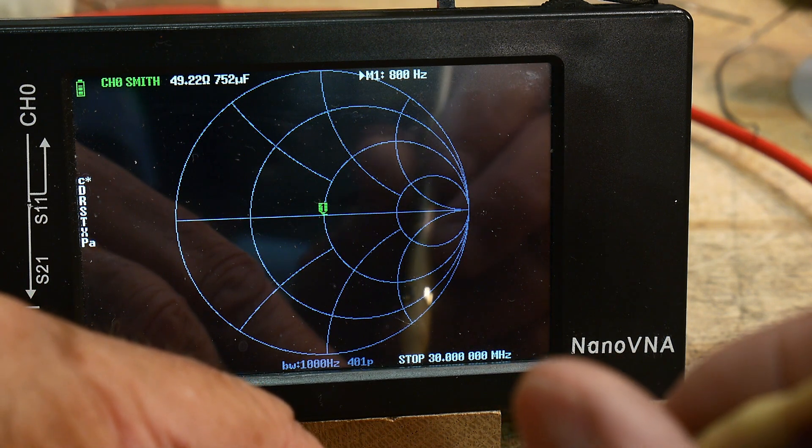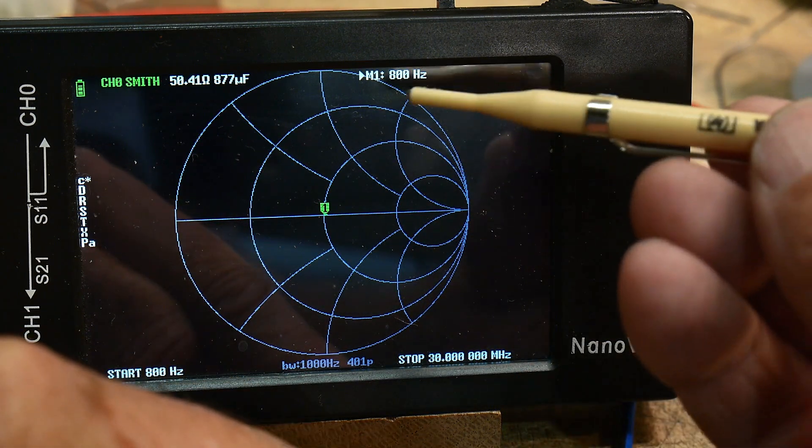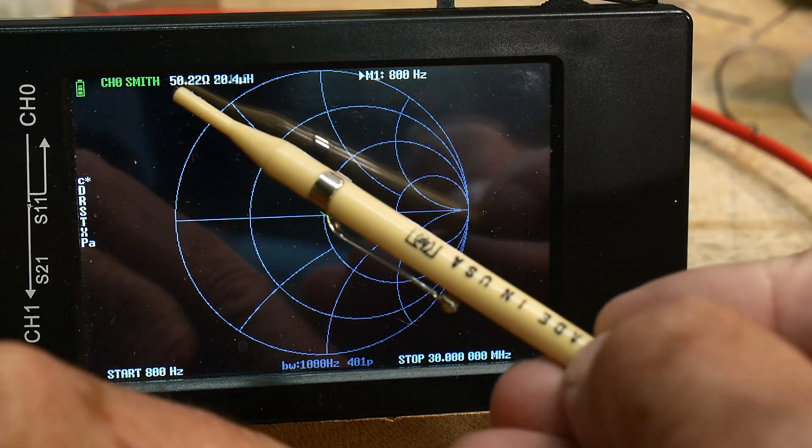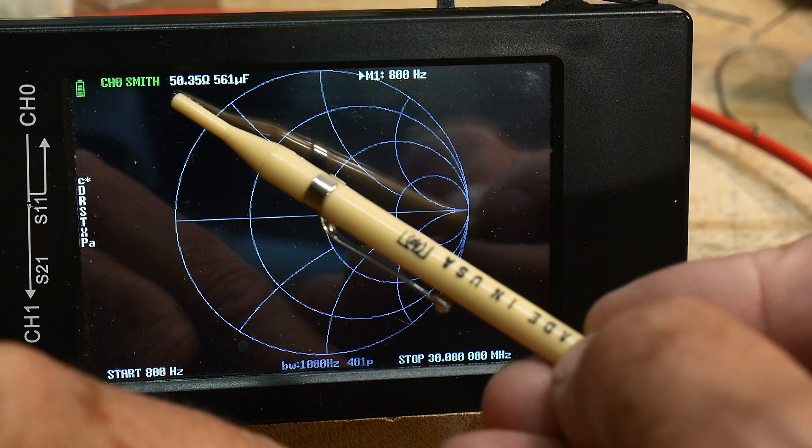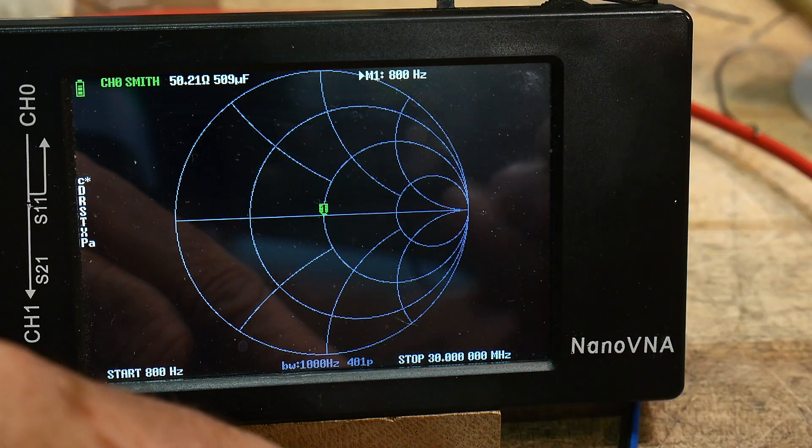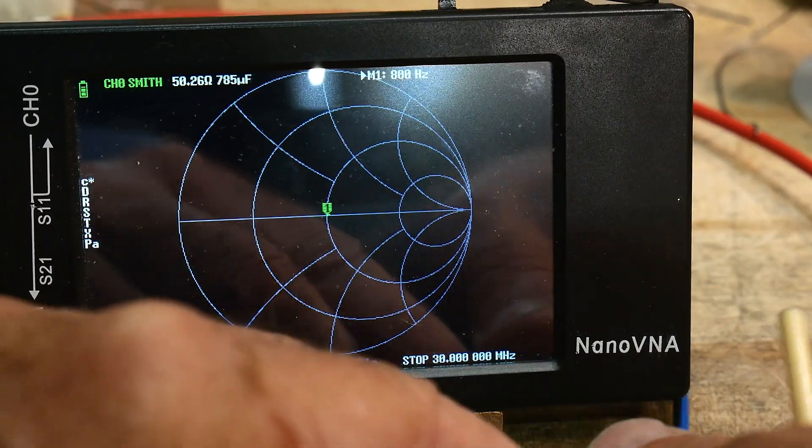And so if we go in between somewhere we should end up around 50 ohms, and so if we twiddle it just right, I think Dave always says you have to have your tongue at the right angle. All right, so there we are, and we can read, I don't know if you can read it, but right there it says 50 ohms, so we can read the value right off the chart with the center, and it says 50 ohms. Okay great, that works good.